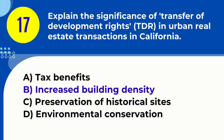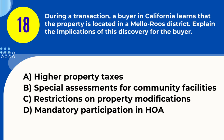Question 18. During a transaction, a buyer in California learns that the property is located in a Mello-Roos district. Explain the implications for the buyer. A. Higher property taxes B. Special assessments for community facilities C. Restrictions on property modifications D. Mandatory participation in HOA. Answer: B. Special assessments for community facilities. Explanation: Properties in Mello-Roos districts are subject to special assessments to fund community facilities and services.